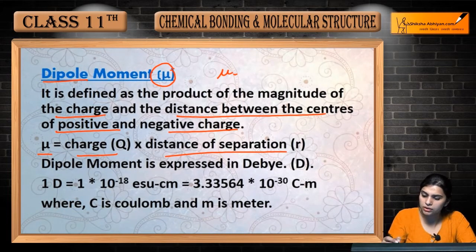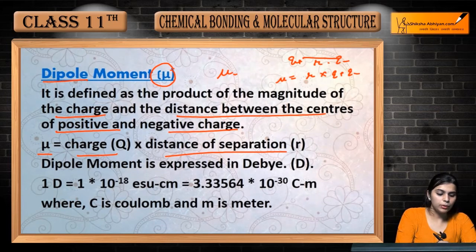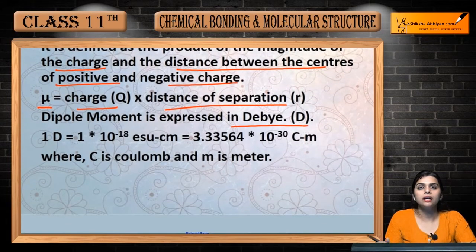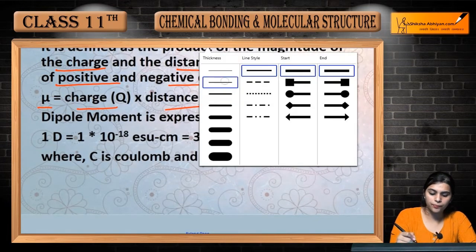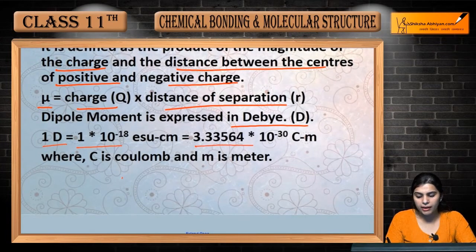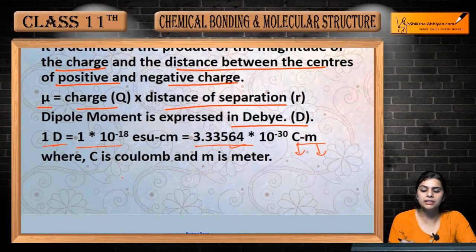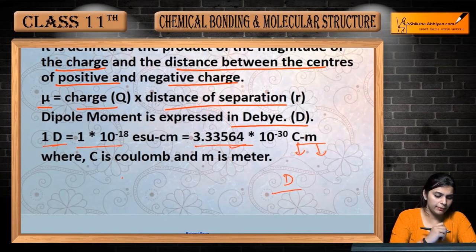Dipole moment mein kya hota hai — ek humara positive charge hai aur ek negative charge hai. Mathematically: mu = q × r, where q is the charge and r is the distance of separation between the two charges. Dipole moment is expressed in Debye (D). One Debye is equal to 1 × 10⁻¹⁸ esu·cm, and one esu equals 3.33564 × 10⁻³⁰ C·m, where C is coulomb and m is meter.